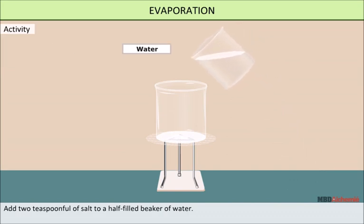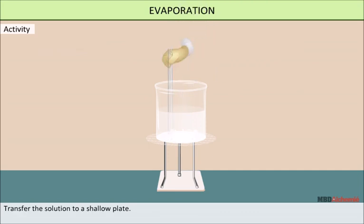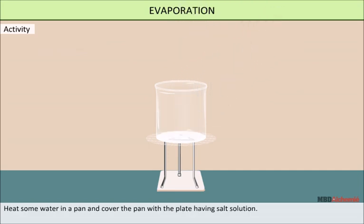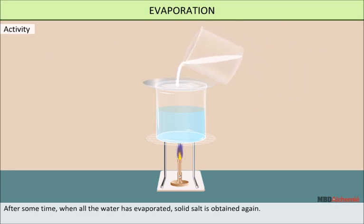Make a solution of salt by taking half a glass of water and adding two teaspoons of salt to it. Pour the clear solution into a shallow plate. Heat some water in a pan and cover the pan with the plate having the salt solution. After some time, when all the water has evaporated, the solid salt is obtained again.